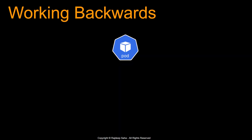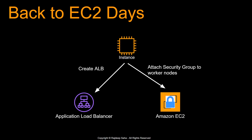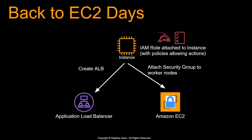Let's start by working backwards. At the end of the day, your precious application is running in a pod and your application or the pod needs access to AWS resources. For example, your application wants to create an application load balancer or maybe wants to attach a security group to worker nodes. Forget Kubernetes for a second — if your application is running in a good old Amazon EC2 instance, you would attach an IAM role with policies allowing actions such as creating an application load balancer or attaching security groups.